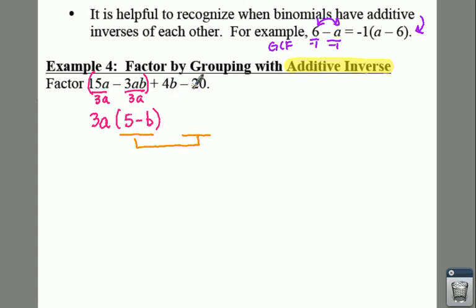If we group the second grouping similarly and you have 4b minus 20, each of these has a 4 in common, so you would take out a positive 4. That leaves 4b divided by 4 is b, minus 20 divided by 4 is 5. Does 5 minus b and b minus 5 the exact same? No, they are not. 5 minus b is not the same as b minus 5—they have different signs. If they have different signs, they are not the same.